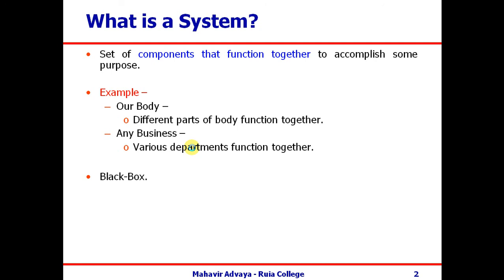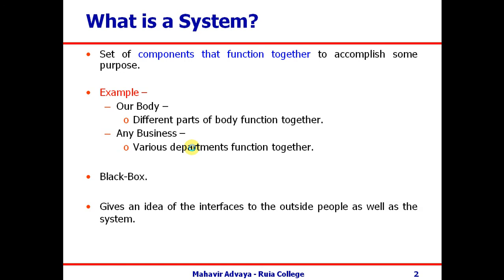In an information system, different users interact with the system, provide inputs, and get outputs in return. Whenever we think about a system, we think of it as a black box with different users interacting, providing inputs, and getting outputs. The system uses interfaces through which users interact — interfaces for the external world and interfaces within the system where different modules share data and information.